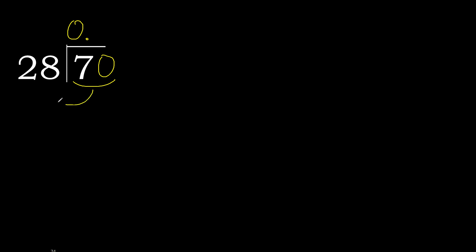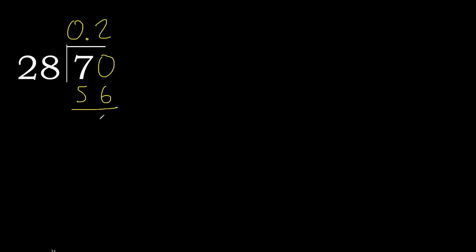70 is not less, therefore work with 70. 28 multiplied by which number is nearest to 70 but not greater? 28 multiplied by 3 is greater. 28 multiplied by 2 is 56, which is not greater. Subtract — 14.